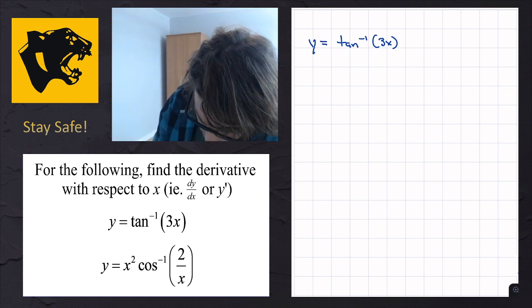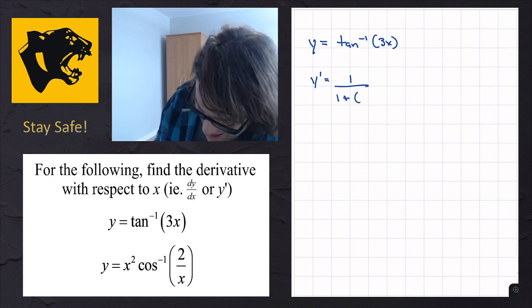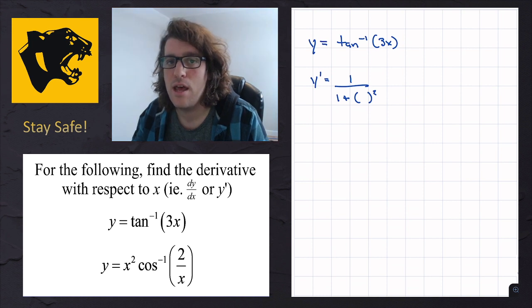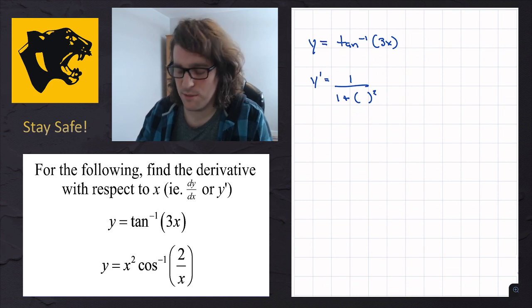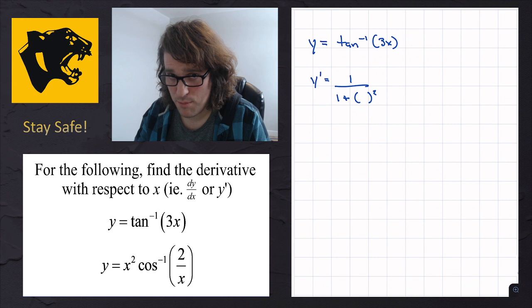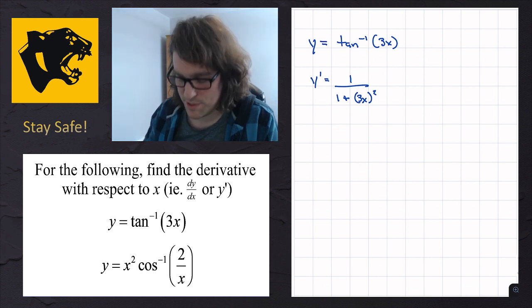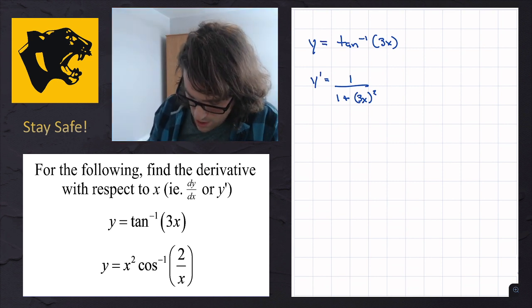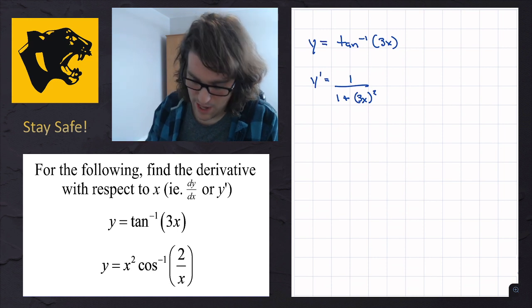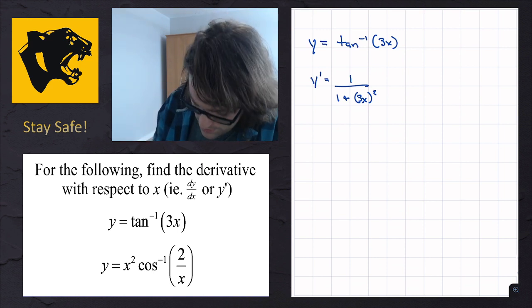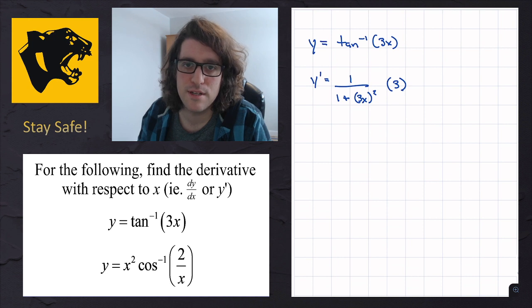Pretty straightforward — we're just going to apply the chain rule. The derivative of inverse tan is 1 over 1 plus x squared. However, x here is not just plain x. Because of the chain rule, the argument is 3x, so it becomes 1 over 1 plus (3x) squared. This is the derivative of the outside evaluated at the inside, times the derivative of the inside. The derivative of 3x is just 3, and that's the end of this question.